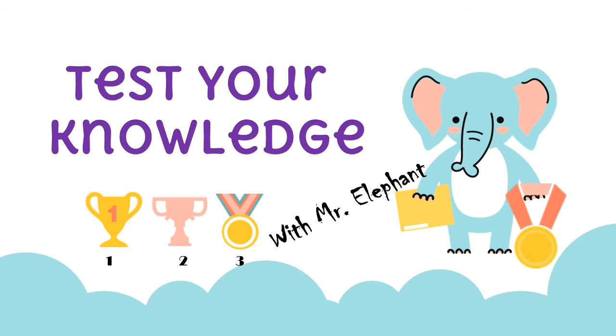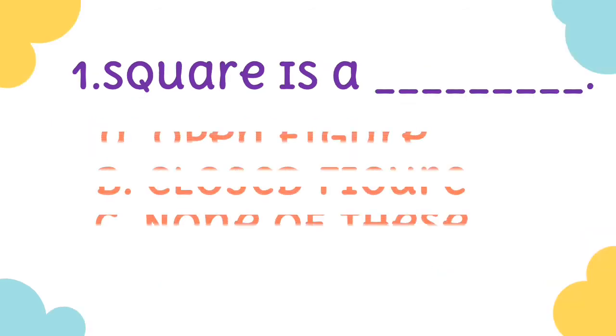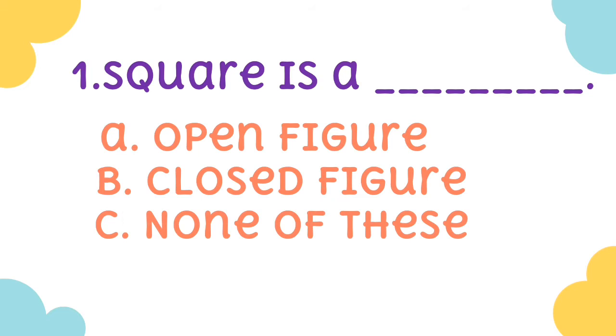Test your knowledge with Mr. Elephant. First, square is: A open figure, B closed figure, C none of these.